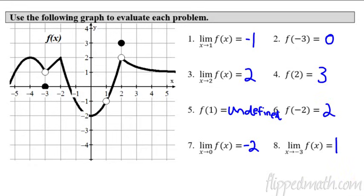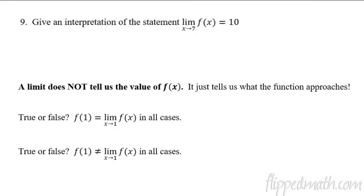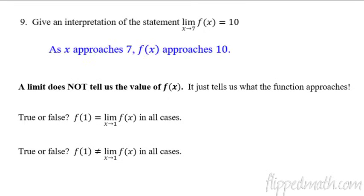That's how you find a limit when you just have the graph. We're not doing one-sided limits yet — we'll cover that in the next lesson. This is just about what y value is being approached as an x value approaches something specific. To wrap up, let's have an interpretation statement. If we have the limit as x approaches 7 of f of x equals 10, we interpret it as: as x approaches 7, f of x approaches 10. It's important to understand a limit does not tell us the actual value of f of x — it just tells us what f of x is approaching, not what it actually equals.